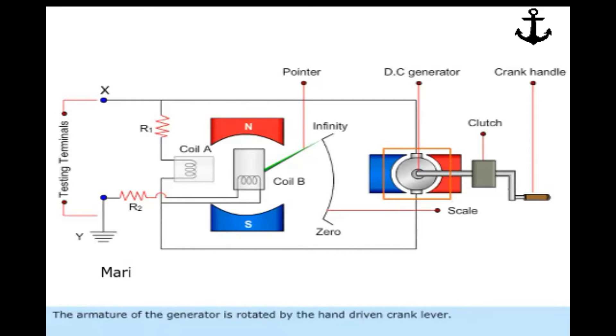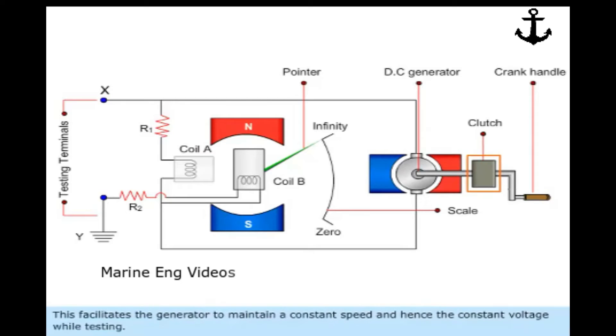The armature of the generator is rotated by the hand-driven crank lever. The clutch mechanism is designed to slip at a predetermined speed. This facilitates the generator to maintain a constant speed and hence constant voltage while testing.